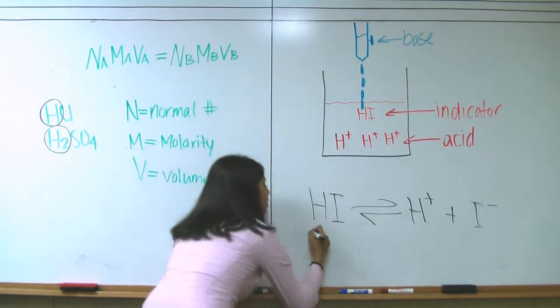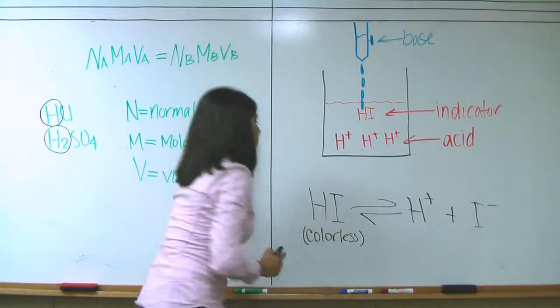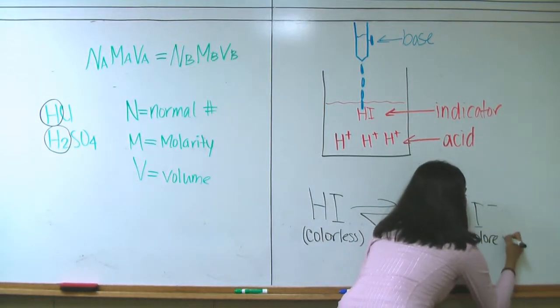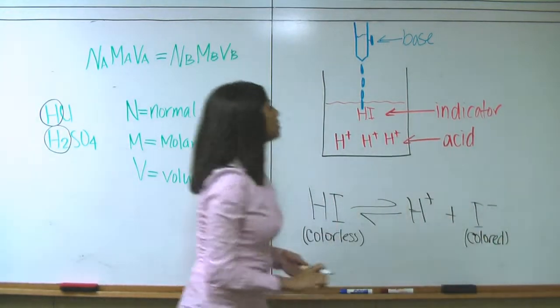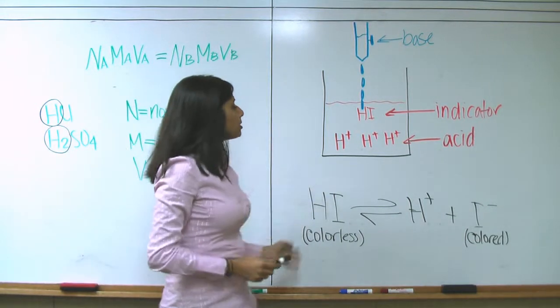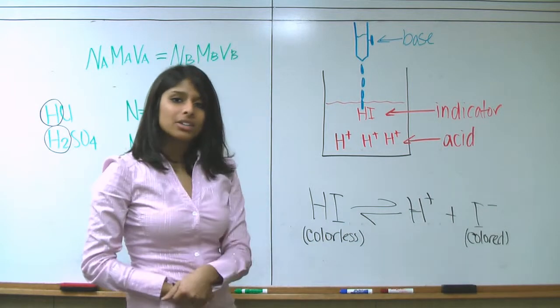Now, HI is a colorless solution, whereas I- is a colored solution. As soon as the base hits the HI and dissociates the bond to form I-, we see a splash of pink color that forms. But it goes away very quickly.